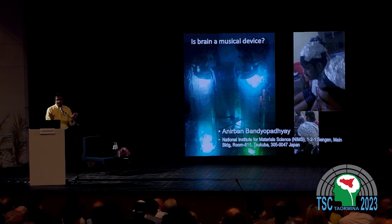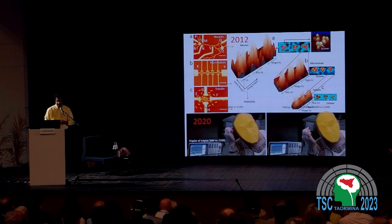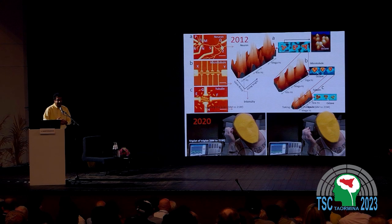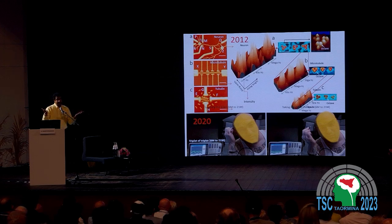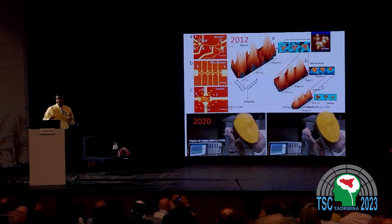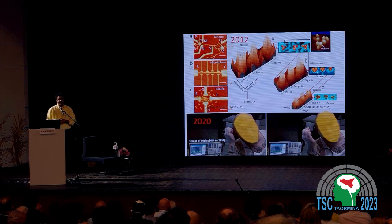These are the two primary aspects I will share today. In 2012, we showed that if you go to single protein scale and try to understand the vibrations and the frequencies, those are not random. They have a beautiful pattern, and that is called triplet of triplet.